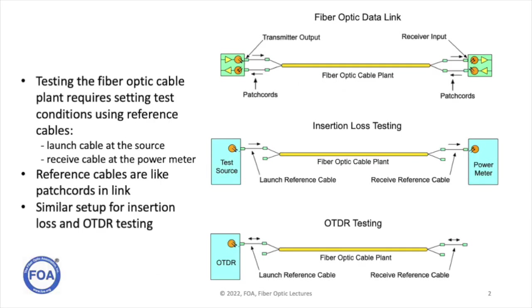When we test a fiber optic cable plant, we need to set test conditions that are similar to the way a communications system will use them. Whether we are doing insertion loss testing with a light source and a power meter, or OTDR testing, we want our test setup to look the same way that the communications system will be using the cable plant.